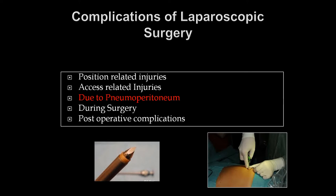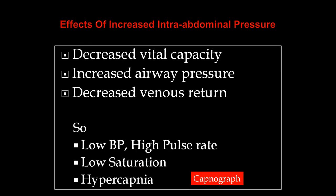Problems due to carbon dioxide pneumoperitoneum include: because of increased intra-abdominal pressure, the diaphragm is pushed up, decreasing vital capacity and increasing airway pressure. Increased intra-abdominal pressure combined with patient posture can diminish venous return, causing decreased cardiac output. The patient may therefore have low blood pressure, high pulse rate, low saturation, and hypercapnia. We must carefully monitor the patient, hydrate well, monitor oxygen saturation, and hyperventilate to allow CO2 to be expelled. CO2 levels should be monitored using a capnograph in every laparoscopic case.